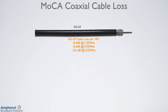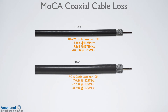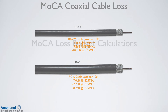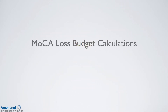Next we'll look at the MOCA losses through the coaxial cable. Since the MOCA frequencies are higher than the standard cable frequencies, they will have more loss through the cable. Here are the losses you should expect at the MOCA frequencies for RG59 and RG6 cable. Now that we've covered the MOCA losses through individual devices, let's do some loss budget calculations through a few installation examples.